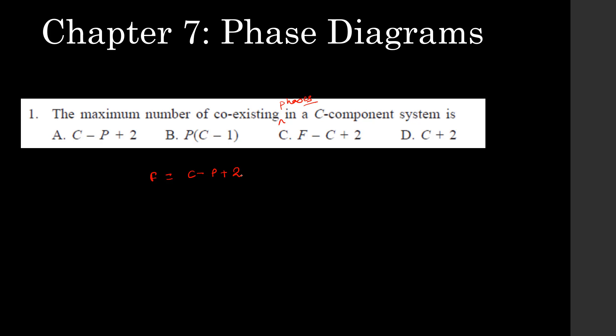To find the maximum number of phases, we can write P = C + 2 - F. For P to be maximum, F should be minimum. What is the minimum value of F? It is 0. So P_max = C + 2. This is the answer.